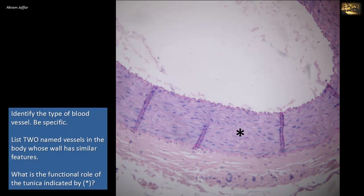Identify the type of blood vessel, be specific. List two named vessels in the body whose wall has similar features. What is the functional role of the tunica indicated by the star?